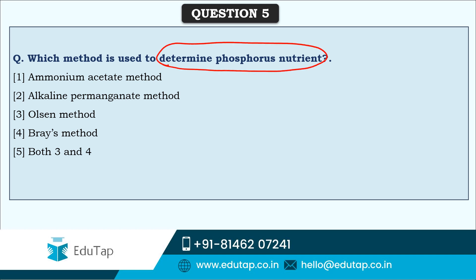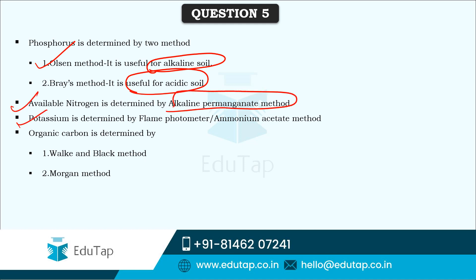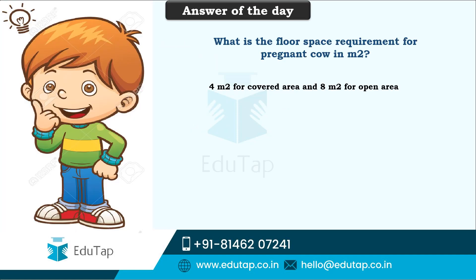The next question asks: which method is used to determine the phosphorus nutrient? Based on the type of nutrient, various methods are used. For phosphorus, both the Olsen method and the Bray method can be used. The Olsen method is used for alkaline soils, while the Bray method is used for acidic soils. Available nitrogen is determined by the alkaline permanganate method, potassium by flame photometer or ammonium acetate method, and organic carbon by the Walkley and Black method and the Morgan method.